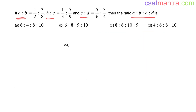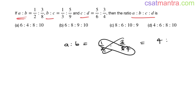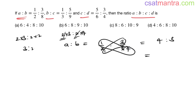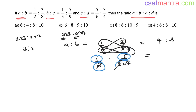For a:b = 1/2 : 3/8, you can cancel the denominators. So we get 1×4 = 4, and 3×1 = 3, giving 4:3. And here you have 3:2. Here 8 is 2×4, so 2 and 2 get cancelled.